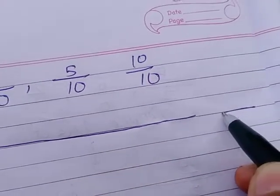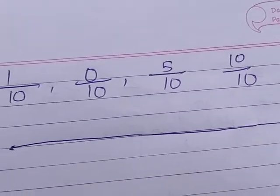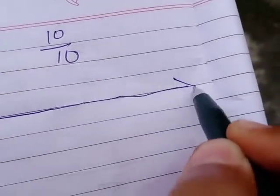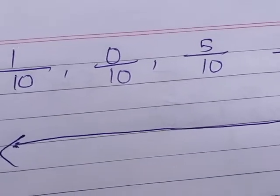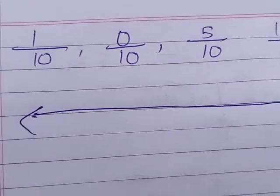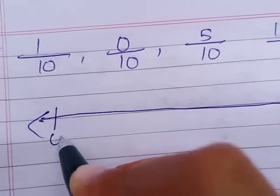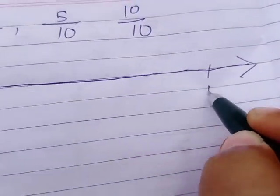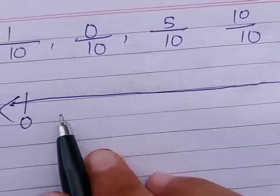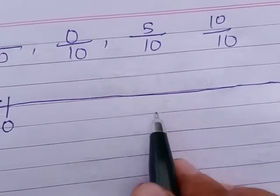I'll make a big number line because we need to have 10 divisions. Why 10 divisions? Because the denominator is 10. Whatever the denominator is, that's how many parts we need to divide our number line. So this is 0 and here I'll write 1. In between 0 to 1, I'll make 10 divisions.